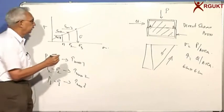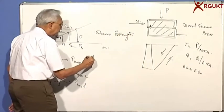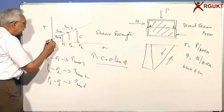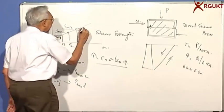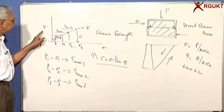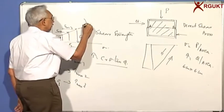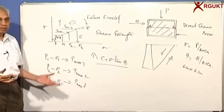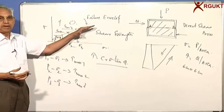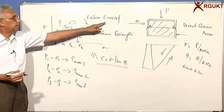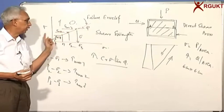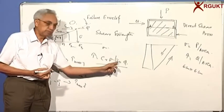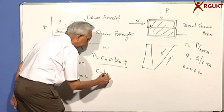What Coulomb said was tau is equal to C plus sigma tan(phi). The intercept is C, and this angle is phi. The equation of the failure envelope — the soil cannot take any stress above this line, because this represents the maximum shear values plotted for various normal stresses. That is why we call it the envelope. C is the intercept on the y-axis and tan(phi) is the slope.